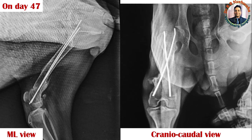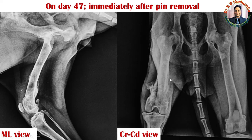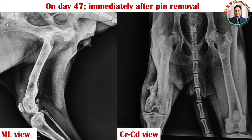This is the mediolateral view and craniocaudal view of the same animal on day 47 immediately after pin removal — just to show how the views look after removing the pins. For removal of the pins, we anesthetized the patient completely using the same combination given on the day of operation: a combination of ketamine, xylazine, propofol, and then maintenance on isoflurane anesthesia. For pin removal, we simply made an incision just over the trochanteric fossa, followed by blunt dissection of the subcutaneous tissue, then palpated with the fingertip the tip of the K-wire.